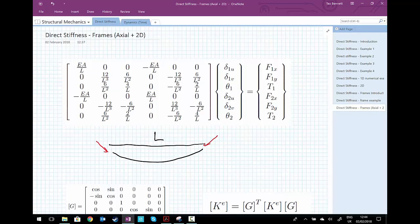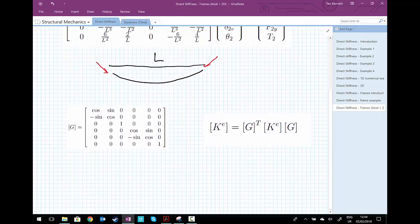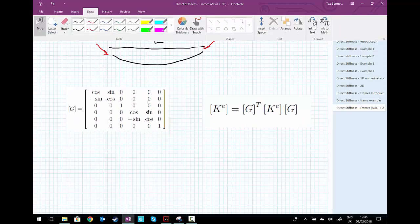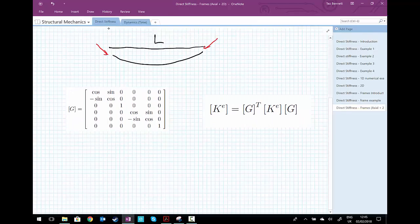Obviously, a one-dimensional beam element isn't that much use to a designer, so again like we did with trusses, we'd like to convert our equations into two dimensions. And so what we need to do is define the transformation matrix that would be appropriate.